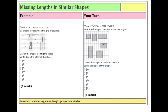The only shape similar to shape F is B. So B is your answer for the first one. Have a look at the question on the right hand side — have a go at that one yourself. Pause this video if you need a little bit more time and we'll look at the answer.